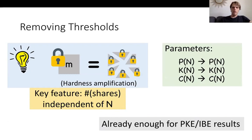Combining this generic removal of thresholds with our parameter-size trade-off from the previous technique is already enough to get us our public key encryption and identity-based encryption results.